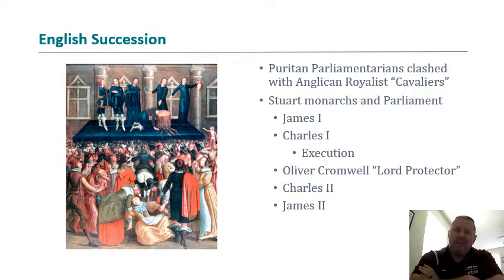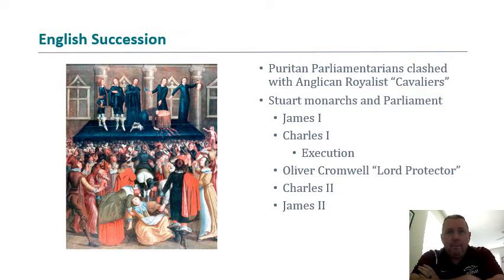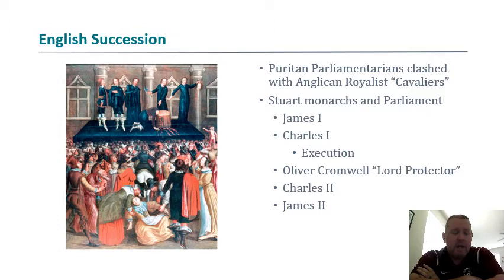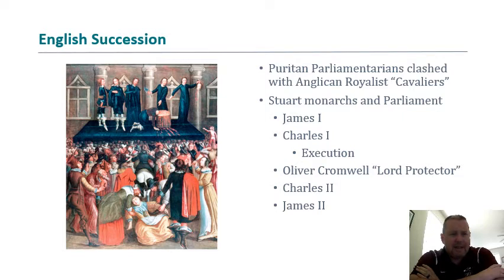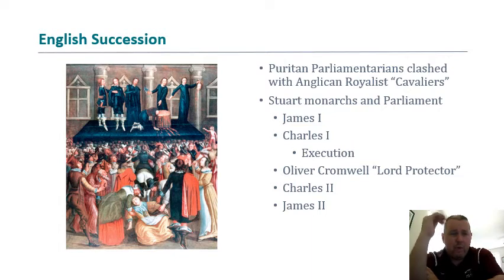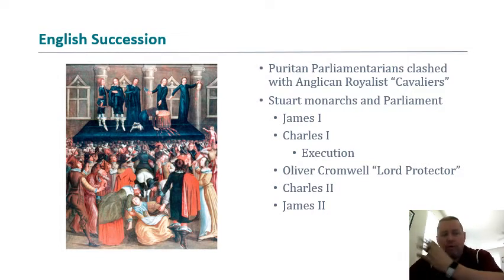One thing you'll learn in a government class is that having a chief executive — and a monarch fits that category — is actually beneficial in some regards. So the English reestablish the throne. Charles rules and then James takes over, but James doesn't last very long due to religious issues and disputes over how much involvement to allow Parliament. Ultimately Parliament runs things, but you still have a monarchy — which is what you see in England today.